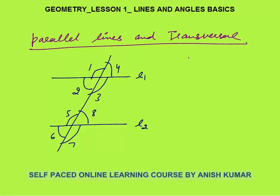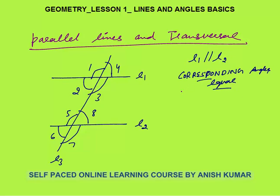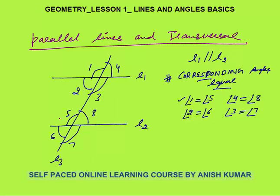Next is parallel lines and a transversal line. L1 is parallel to L2 and line L3 is the transversal. When the lines are parallel, corresponding angles are equal. So 1 equals 5, 2 equals 6, 4 equals 8, and 3 equals 7. Corresponding angles are angles which lie on the same position with respect to the transversal — angle 1 and 5 are both on top of their respective lines and to the left of the transversal.